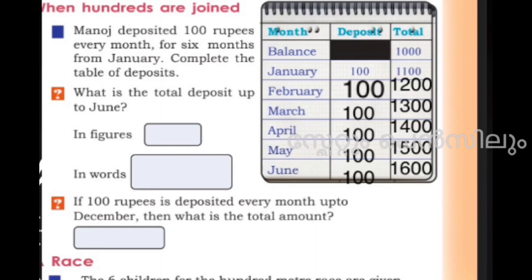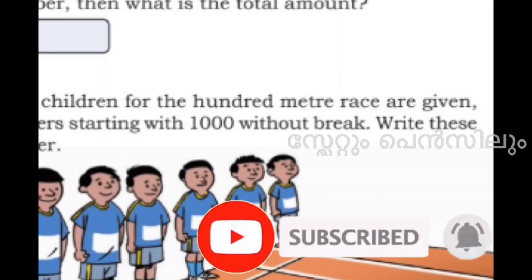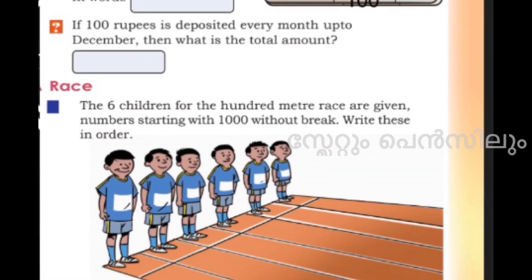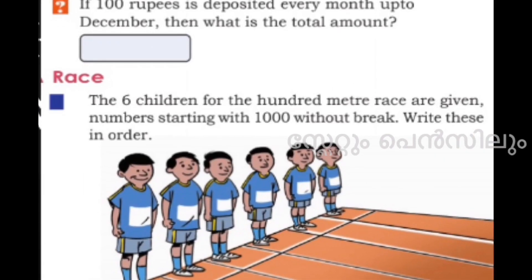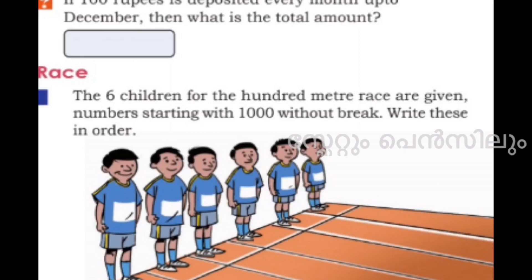How many participants are there? There are six participants. The six children for the hundred meter race are given numbers starting with one thousand without a break. Let us read the portion.